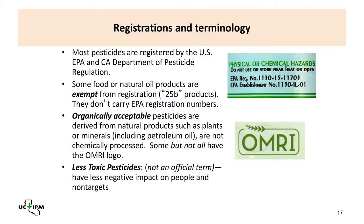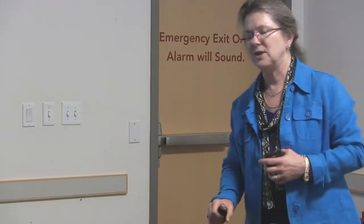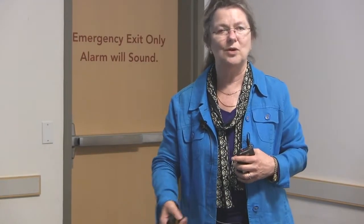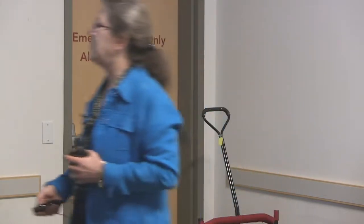Most pesticides are registered by the U.S. EPA (Environmental Protection Agency). The State of California also registers pesticides — only those already registered by the U.S. EPA — because California has stricter regulations. You can tell if a product is EPA-registered by the EPA registration number on the label. Pesticides sold in California stores are presumably registered in California, but if you mail-order pesticides, you may sometimes get products that aren't.